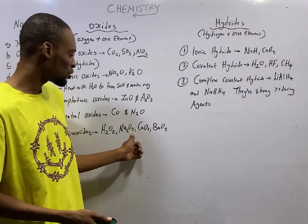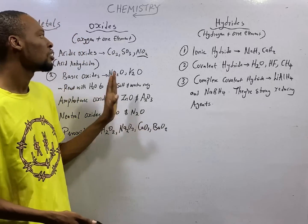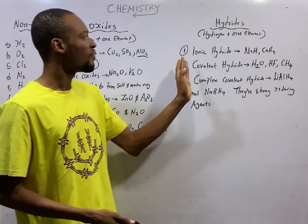H2O2, Na2O2, CaO2, BaO2. These are peroxides. Now, hydrides. We have ionic hydride.